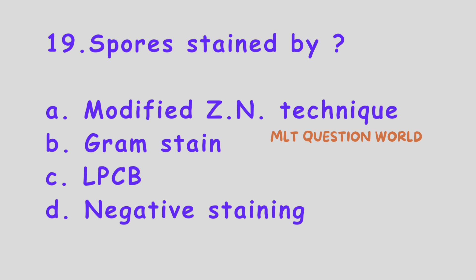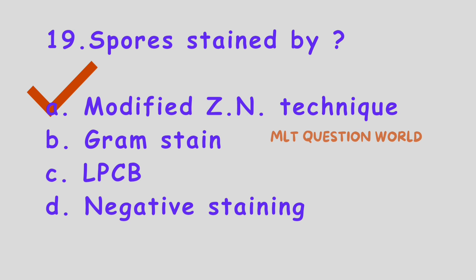Question number 19. Spores are stained by: Option A, Modified Ziehl-Neelsen technique; Option B, Gram stain; Option C, LPCB or Lacto-phenol cotton blue staining; Option D, Negative staining. The right answer is Option A, Modified Ziehl-Neelsen technique.